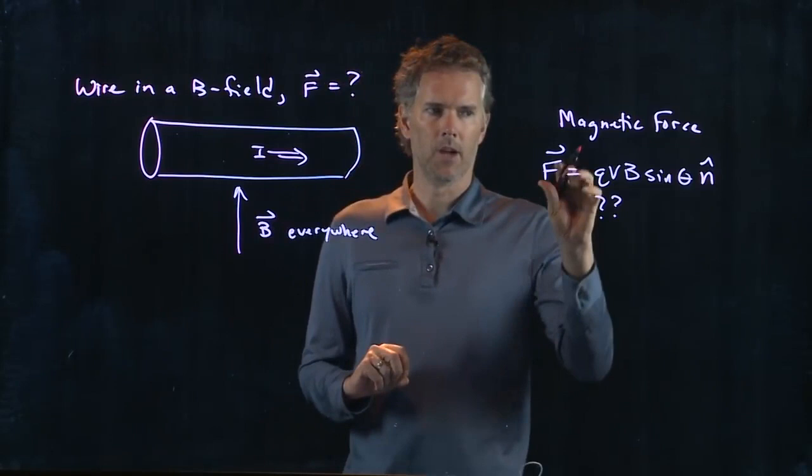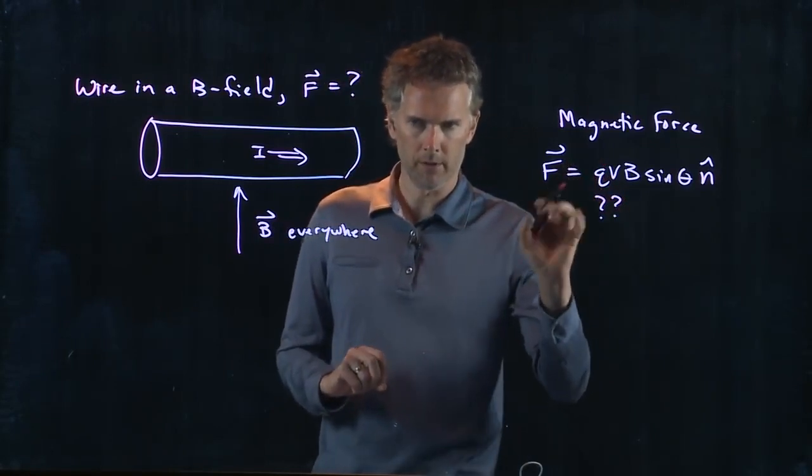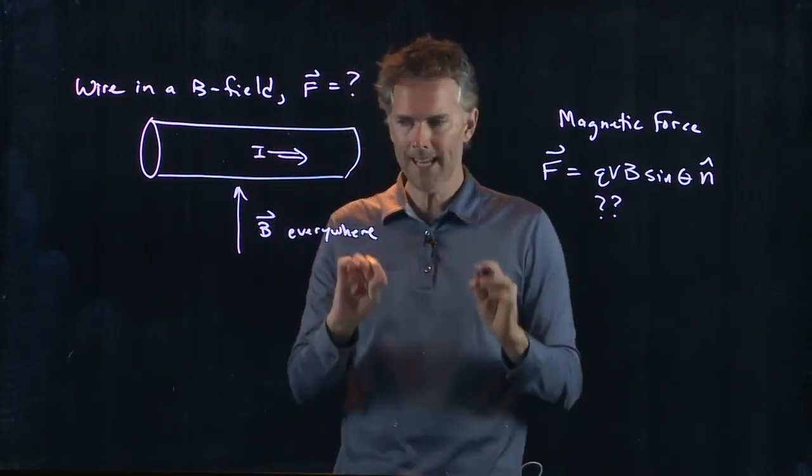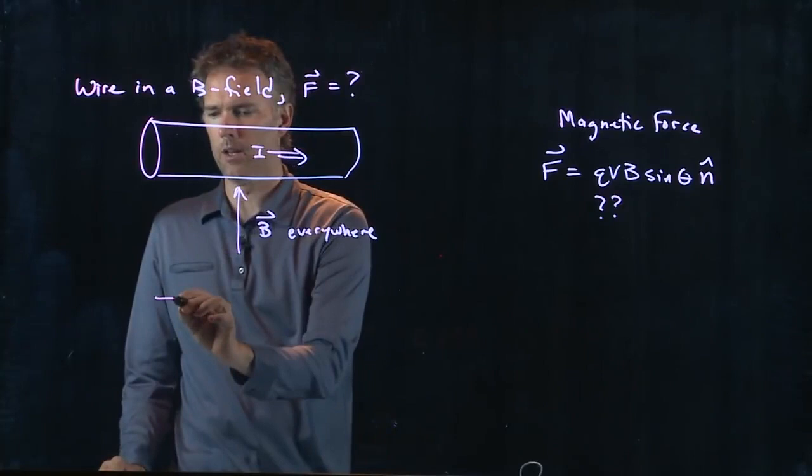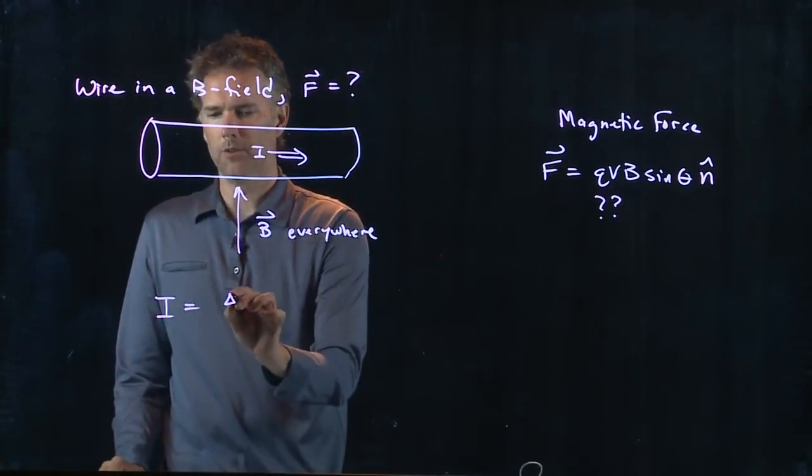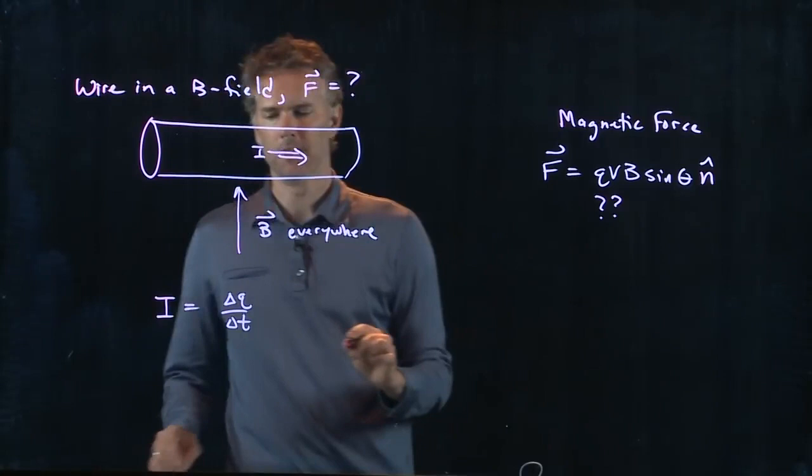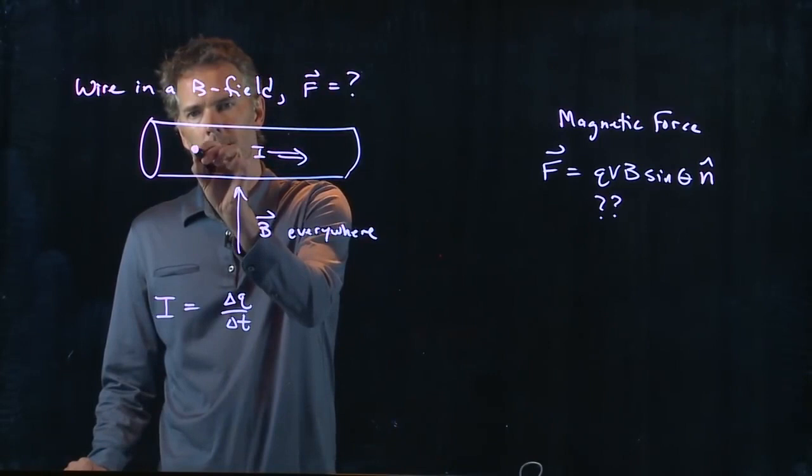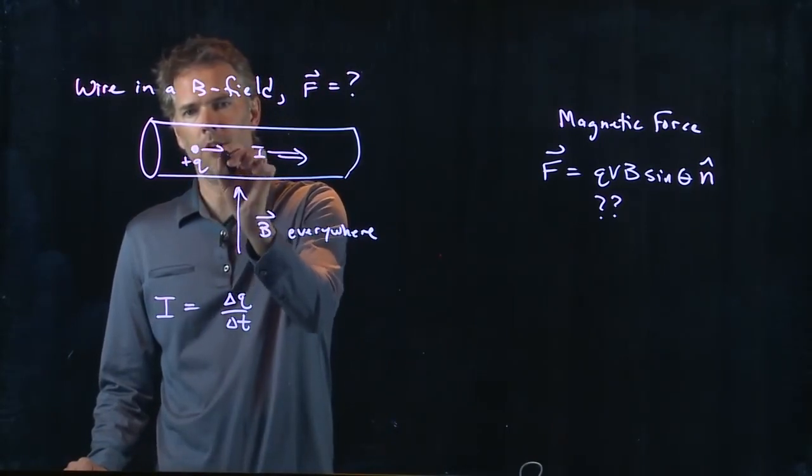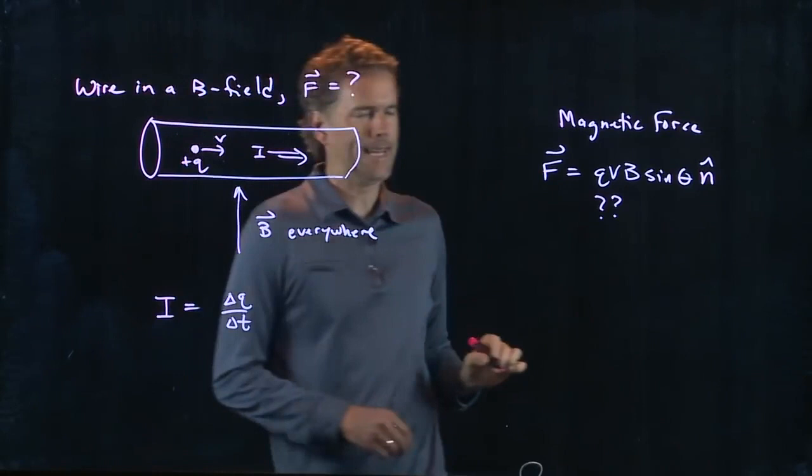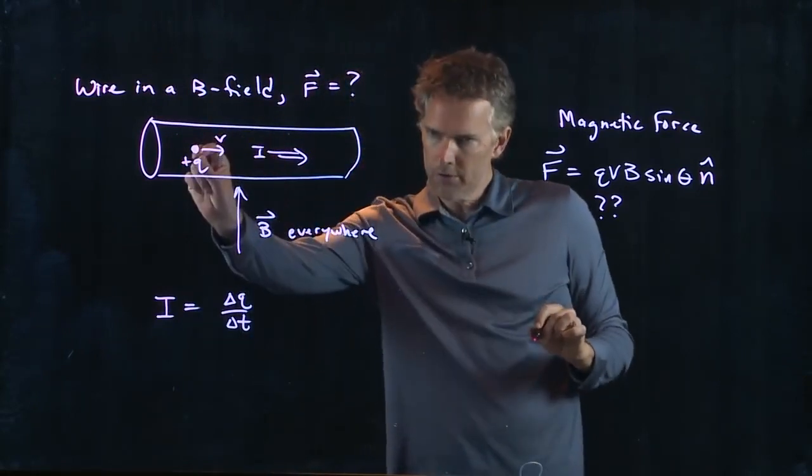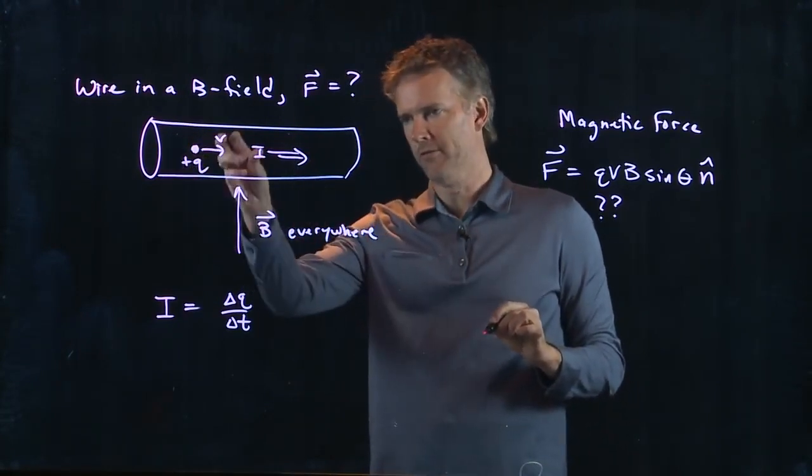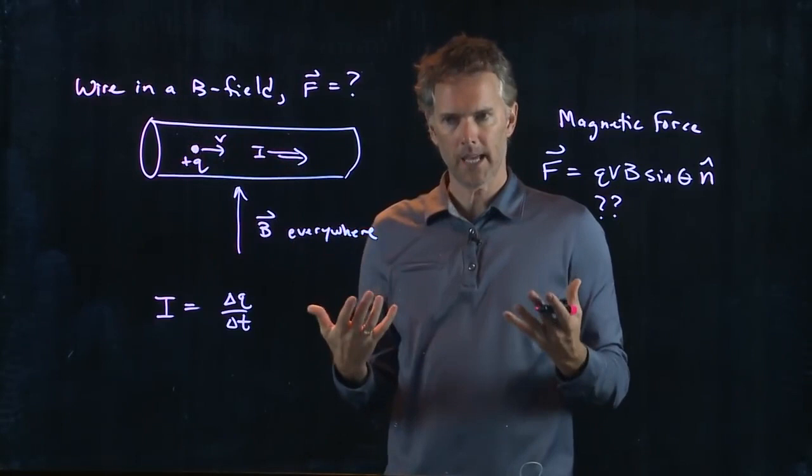Do I have a charge moving? Well, we have a current, right? Current is charge moving. We know what current is. It's delta Q in some amount of time, delta T. So if I think about a wire carrying current, I can consider that is consisting of charges moving at speed V. Charge Q moves at V through the wire. That is current.